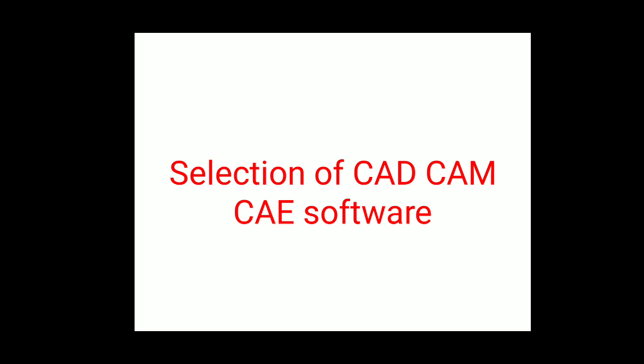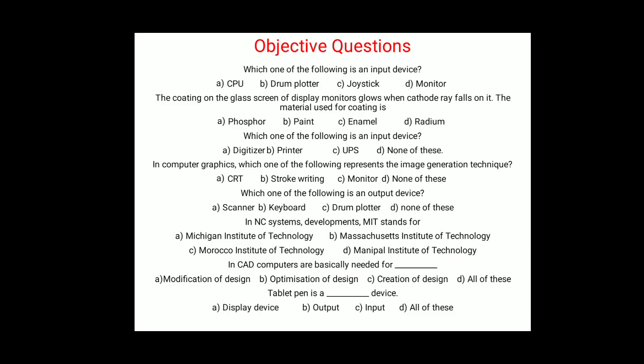Chapter one is now complete. We will look at some sample objective questions. For example: which of the following is an input device — CPU, drum plotter, joystick, or monitor? The answer is joystick. Go through the sample questions to understand how to study the first chapter, which is the introduction to CAD/CAM/CAE.